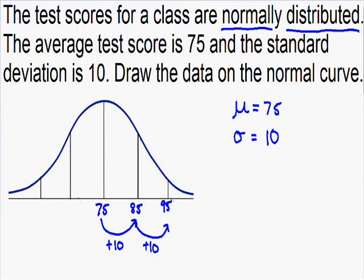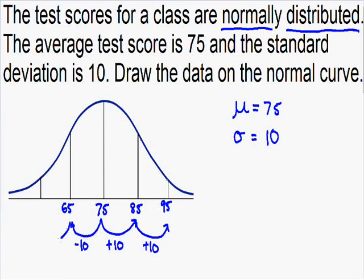The same concept applies going to the left of the average, but instead of adding one standard deviation, you subtract. Going one standard deviation to the left: 75 minus 10 equals 65. Going another standard deviation: 65 minus 10 equals 55.